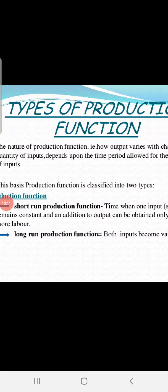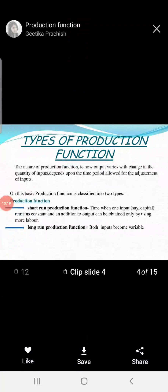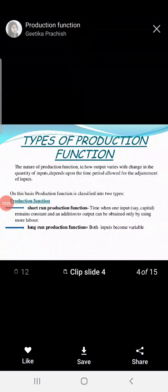In the short run, when one input remains constant and additional output can be obtained by using more labor — consider that five inputs are required: land, labor, capital, raw material, and machinery. Amongst these, all remain constant except you can change only capital, labor, or raw material.